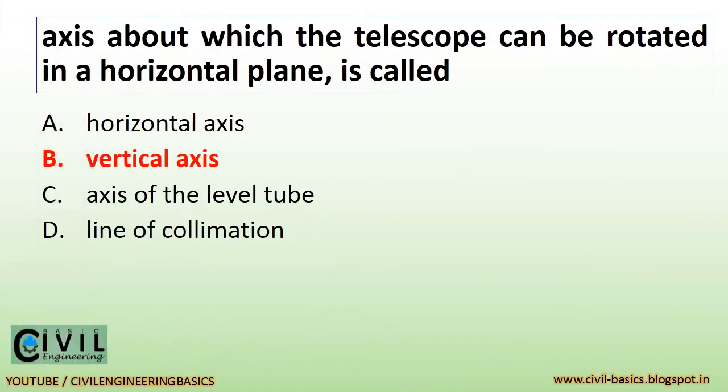The axis about which the telescope can be rotated in a horizontal plane is called the vertical axis.